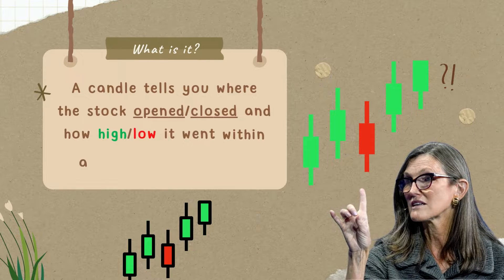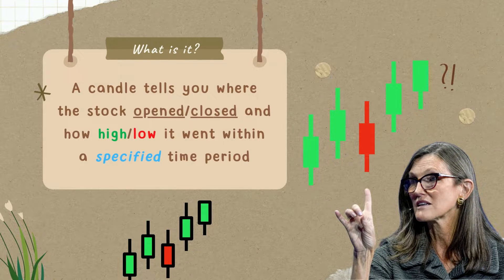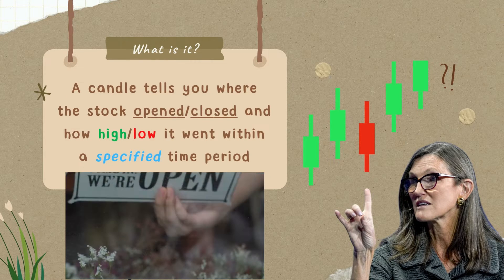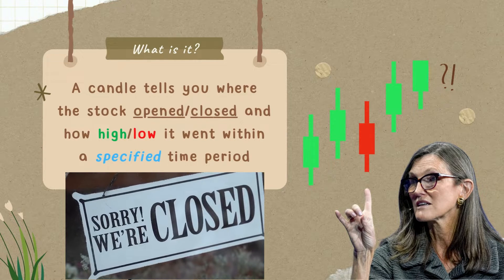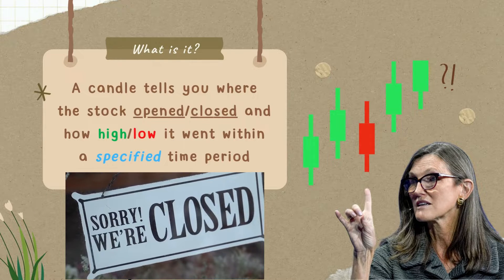A candlestick shows the price movement of a stock within a selected time period. It tells you where the stock opens within that time period, where it closes, how high or how low it went.